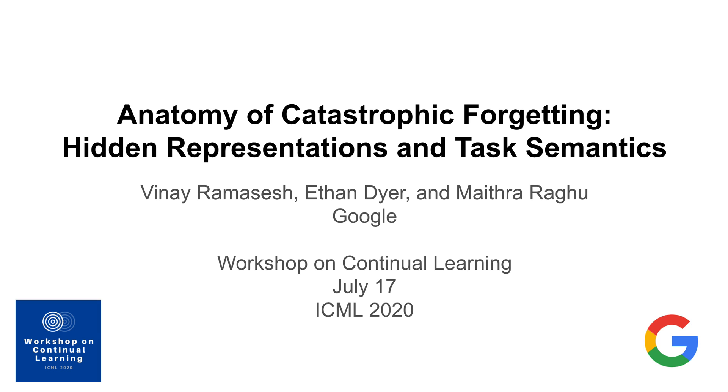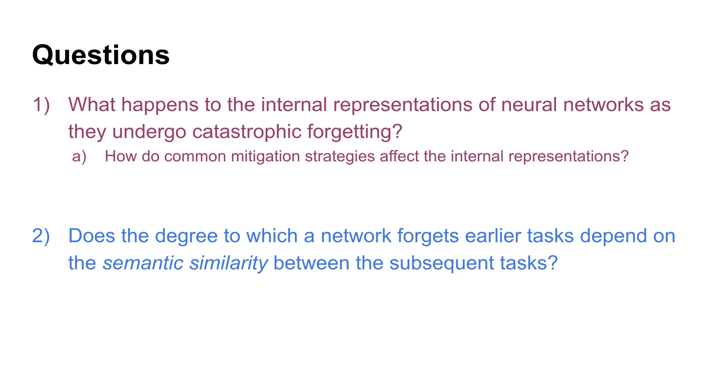Today I would like to tell you about our experiment studying what we call the anatomy of catastrophic forgetting and specifically how it relates to internal network representations and the semantics of task sequences. As we've heard a lot about today, catastrophic forgetting is an obstacle to continual learning and there are many aspects of the problem that we still don't understand. The idea of our work is to explore a couple of these aspects experimentally in order to develop a more comprehensive understanding of catastrophic forgetting.